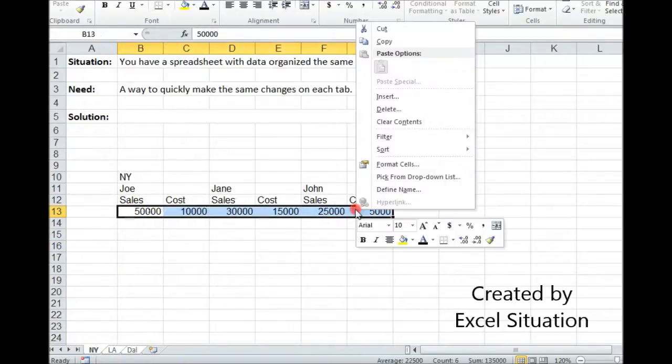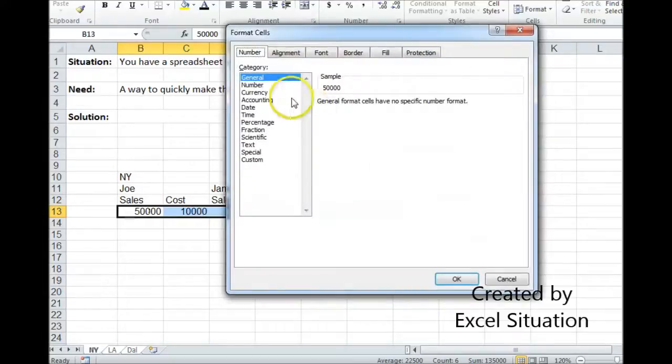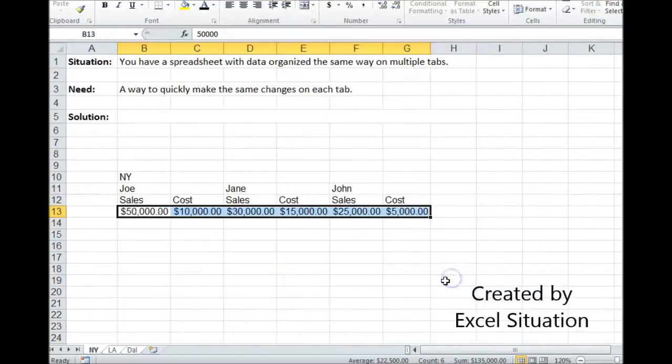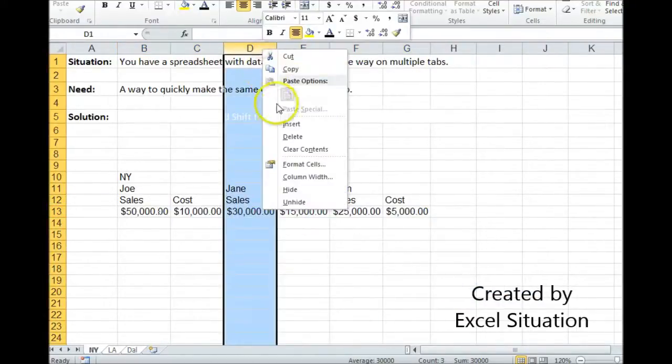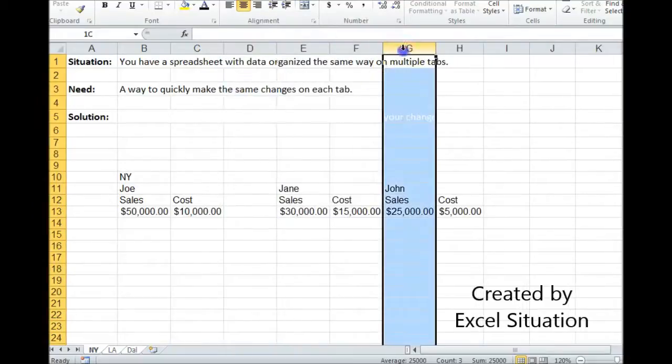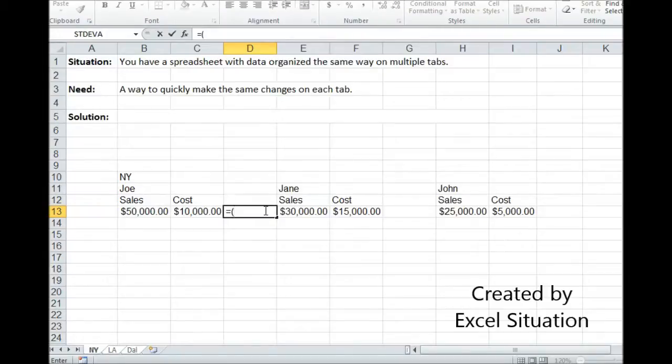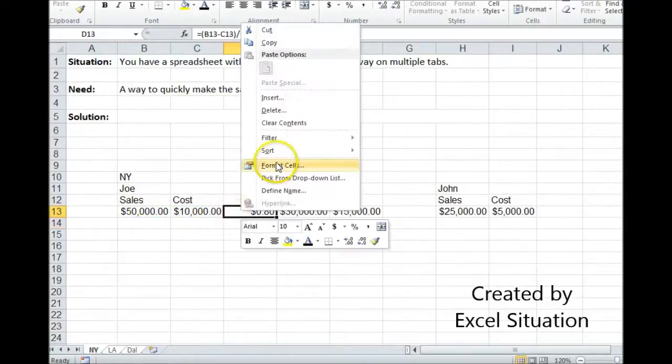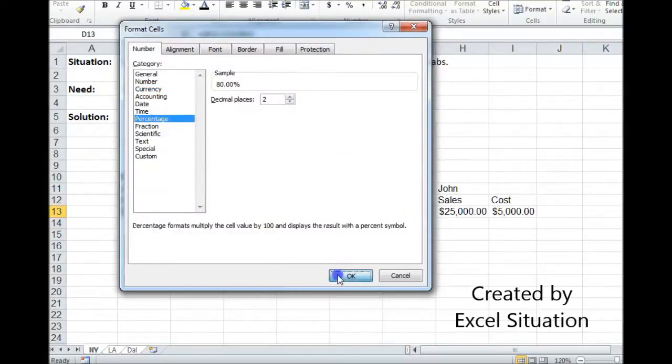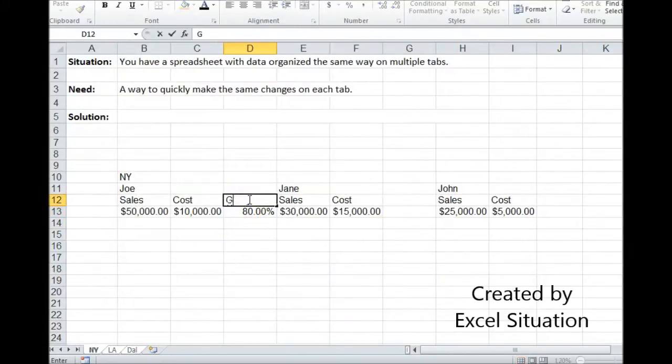First thing I'm going to do is change this to currency. Next thing I'm going to do is insert a column here and insert a column here. Then I'm going to add a formula. I'm going to change this to percentage and type GP above it.